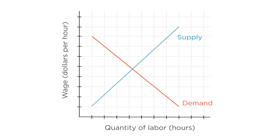The upward sloping supply curve comes from individuals' trade-offs between leisure and consumption. A higher wage means a higher opportunity cost of leisure, leading people to choose less leisure and more work.